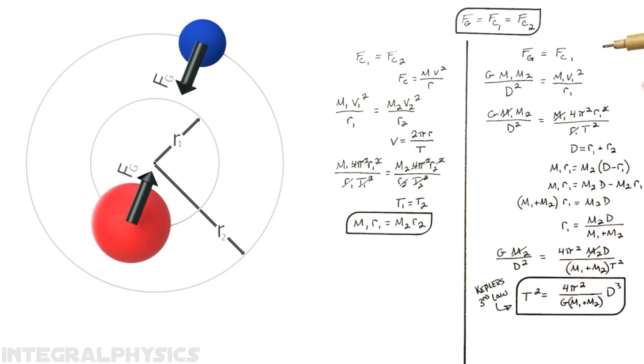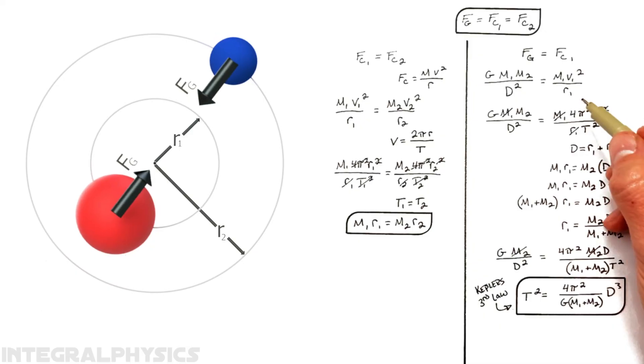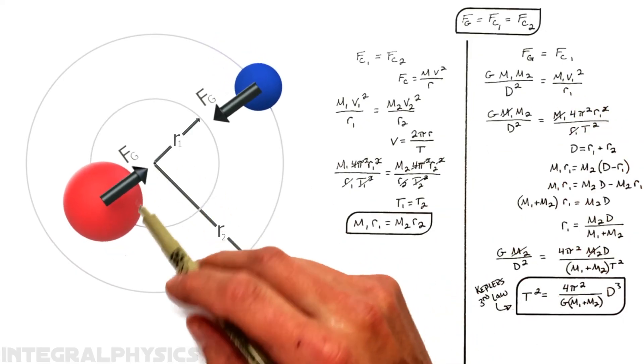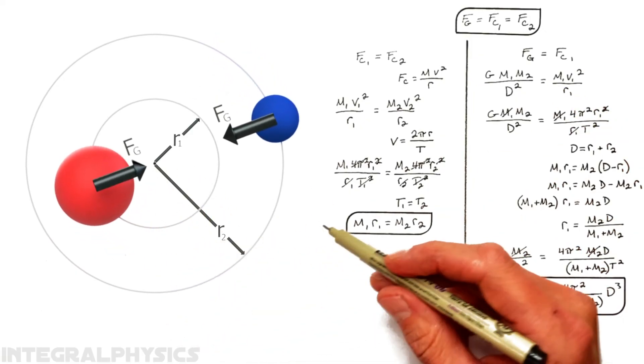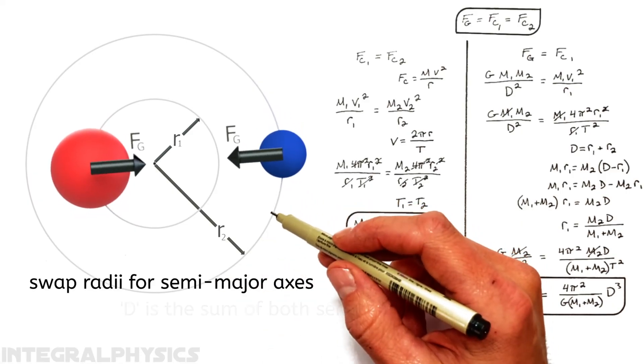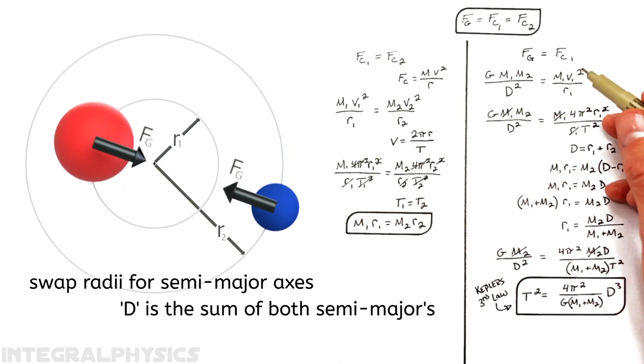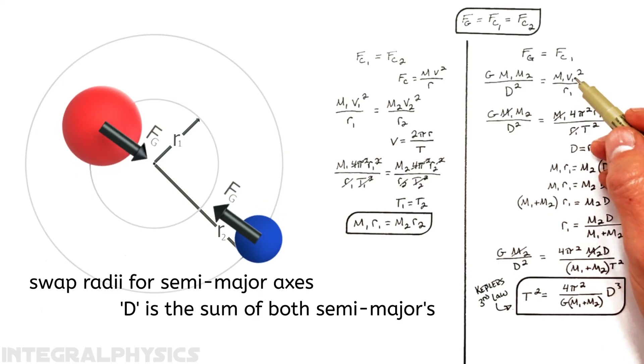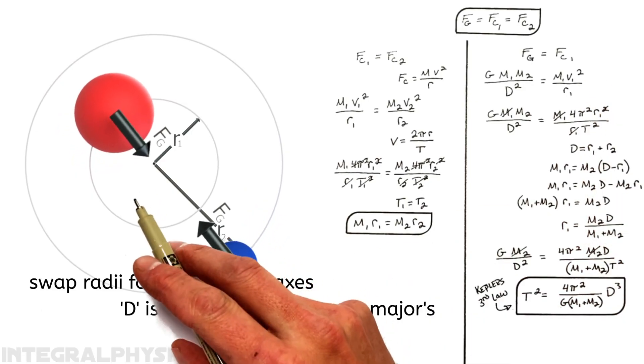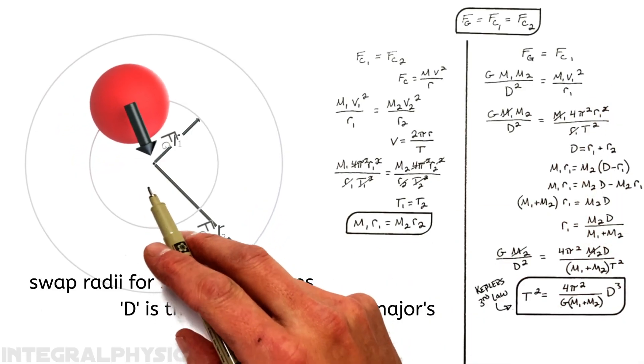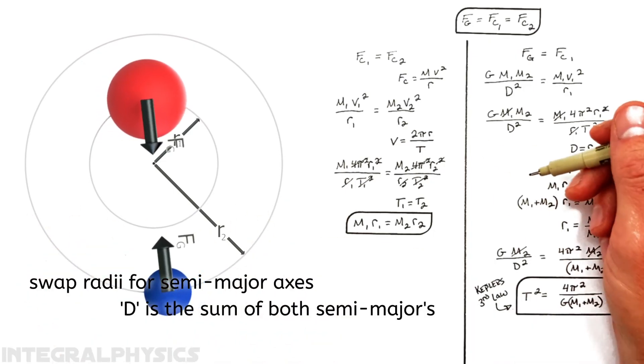Now, I worked out everything here as though these orbits are circular, but the mechanics hold true for elliptical orbits, the difference being that in an elliptical orbit, we trade the radius of orbit for the length of the semi-major axis, where the center of mass of the system lies at the focal point of both of these ellipses.